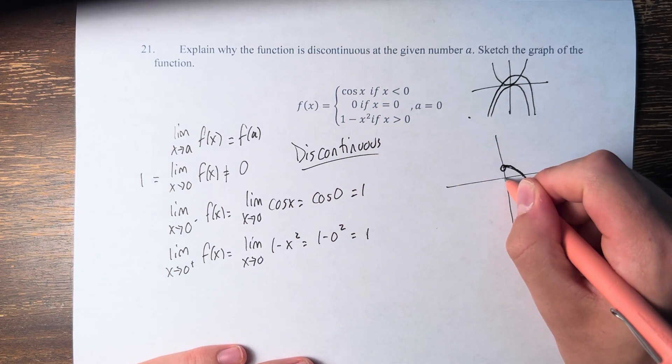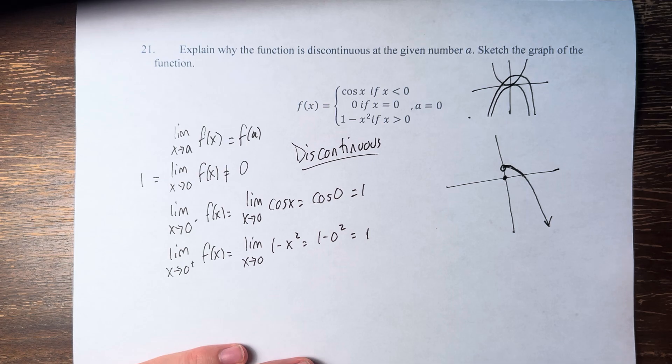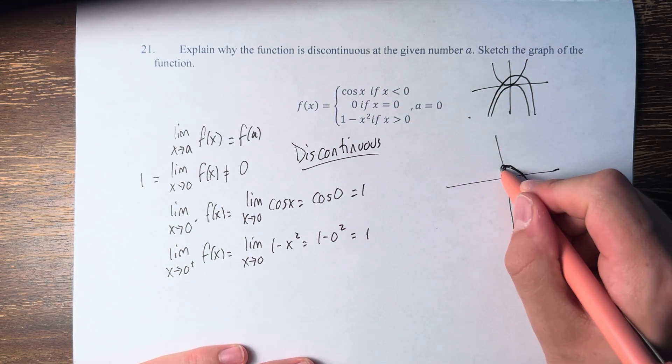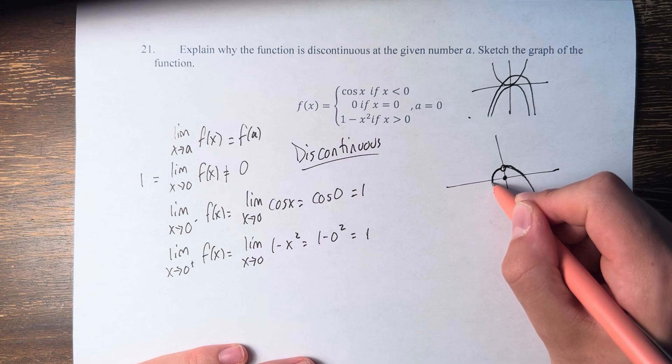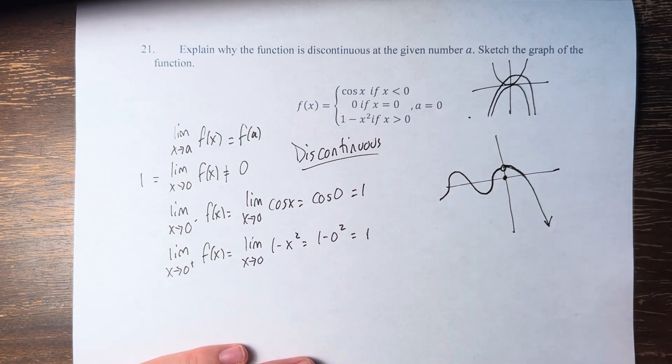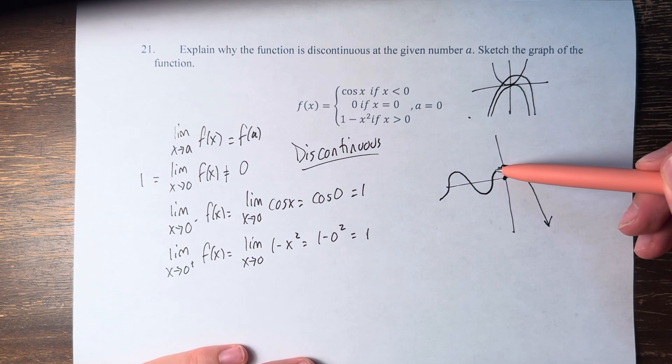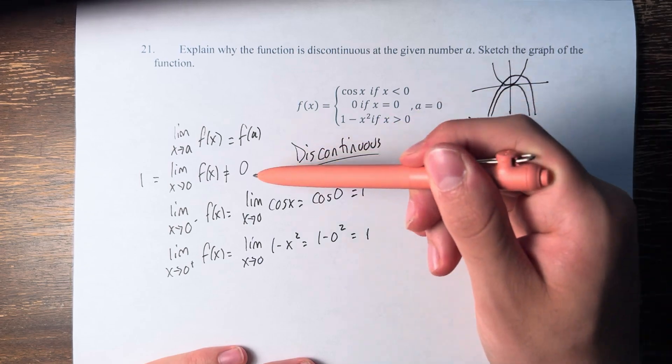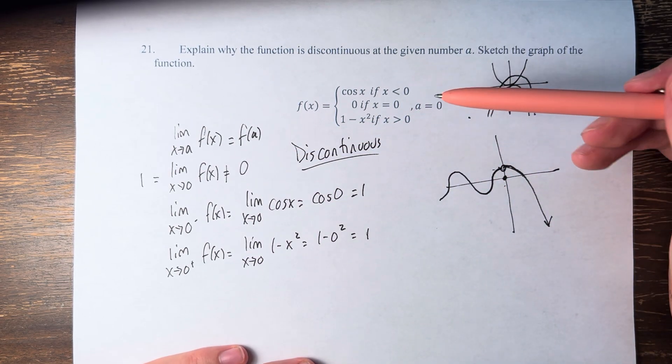At x equals 0, the function equals 0. And at values less than 0, it's cosine of x. So if we draw the cosine function, it just goes off to infinity that way. And we can see that the limit doesn't exist and it equals 1, but it does not equal the value of the function. Therefore by the graph and by the calculations, we can see that the function is discontinuous at x equals 0.